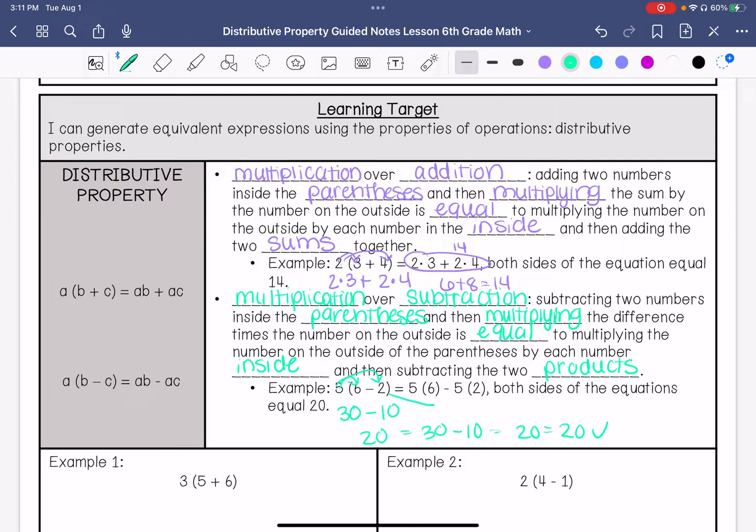Or you could also see that this is 5 times 4, which is also 20. This would be 2 times 7, which is also 14.